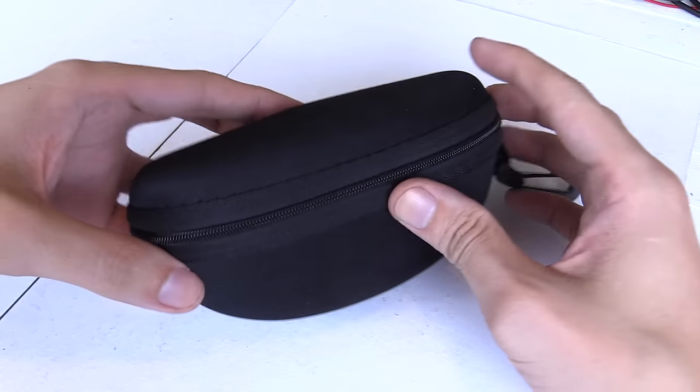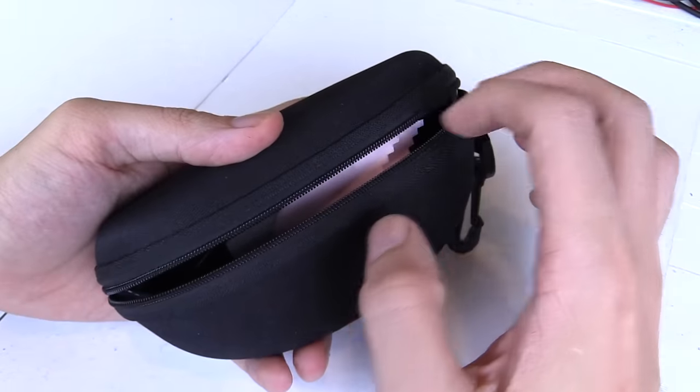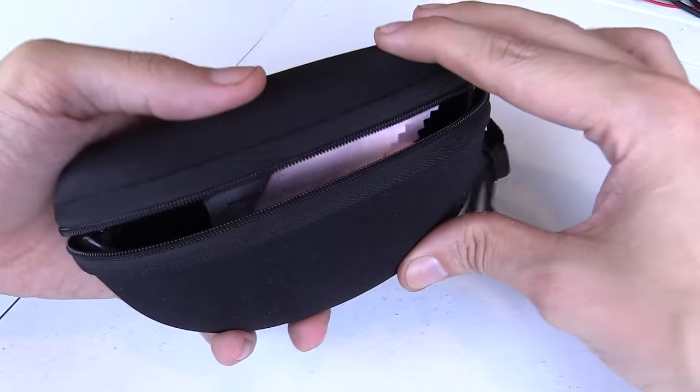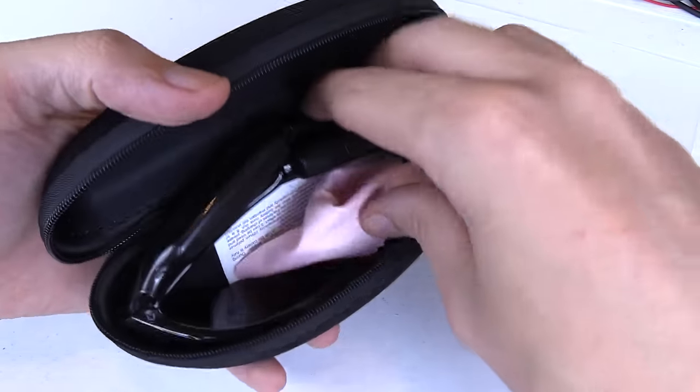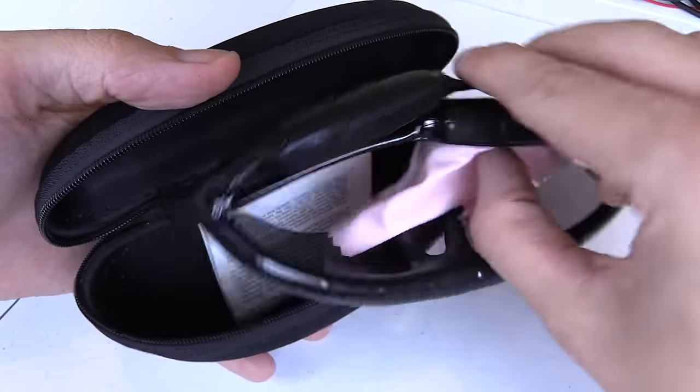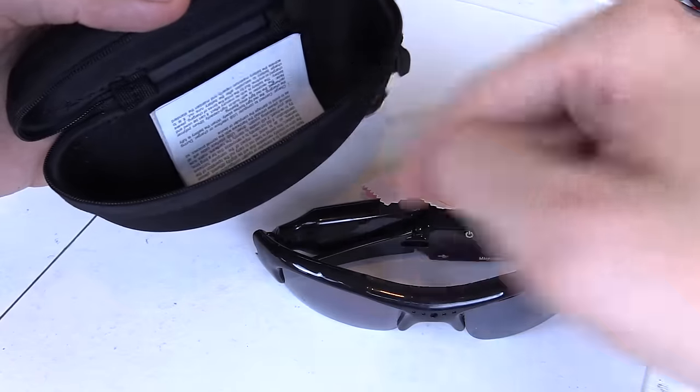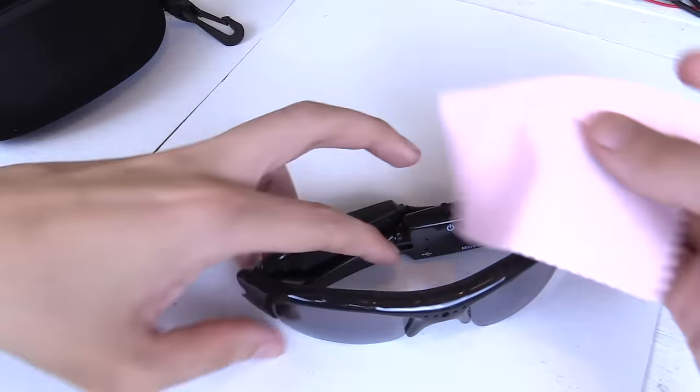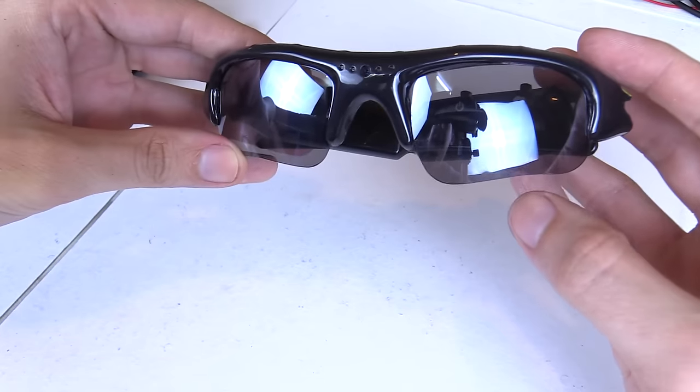So anyway, that's enough of a demo. Let's take these to my table and take a closer look at how they work. Now we're back at my desk, we can take a closer look. The case it comes in is just about big enough to hold the sunglasses. They kind of get squashed in. Inside you get the sunglasses of course, you get an instruction booklet, and a little cleaner for the lenses.